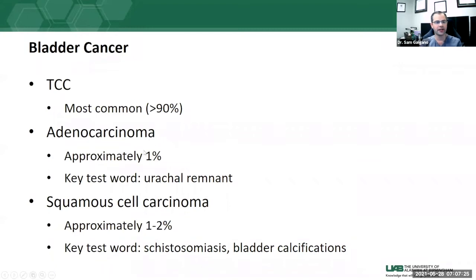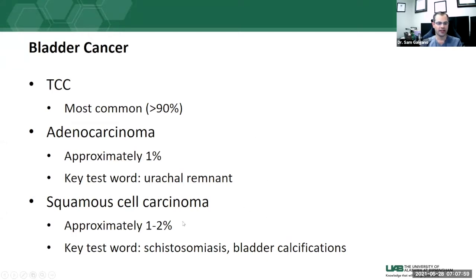Adenocarcinomas account for approximately 1% of bladder cancers. A key test feature is that these can arise in the setting of urachal remnants — the urachus connects the umbilicus to the bladder and normally closes after birth. In some people, a patent urachus or urachal remnant remains, and this is where adenocarcinomas can form. Squamous cell carcinomas account for 1-2% of bladder cancers, and the key association is schistosomiasis infection — uncommon in the US but more common worldwide — which can cause calcifications of the urinary bladder.